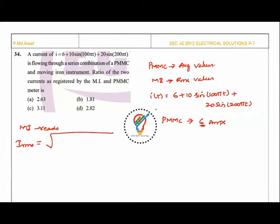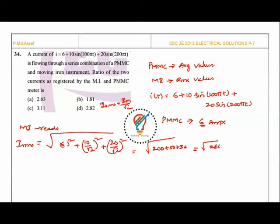IRMS = √(6² + (10/√2)² + (20/√2)²) = √(36 + 50 + 200) = √286.